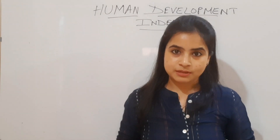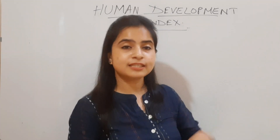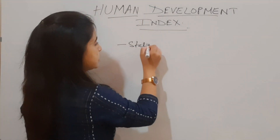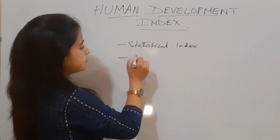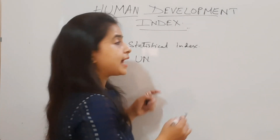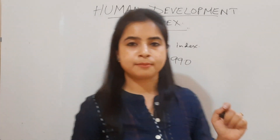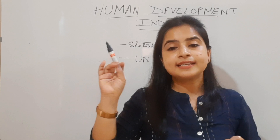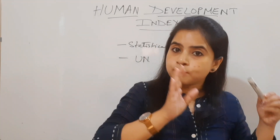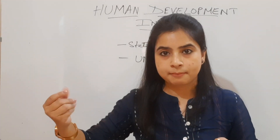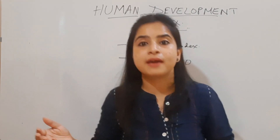The HDI is a very famous and statistical index. It was developed by the United Nations and has been in use since 1990. Its purpose is to measure the changes in the development of both societal and economic development of various countries over time, allowing us to compare them.